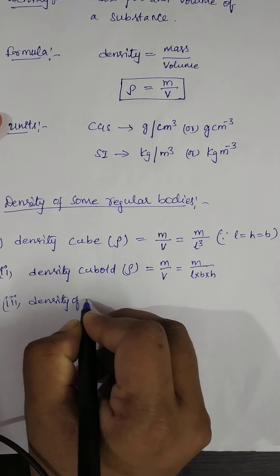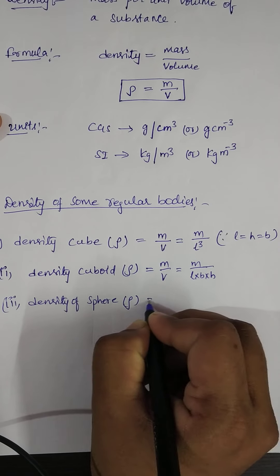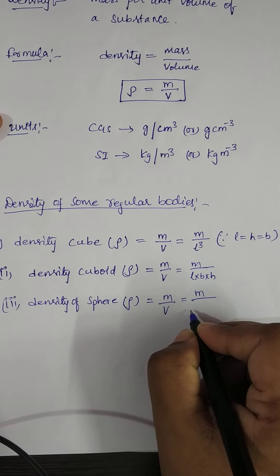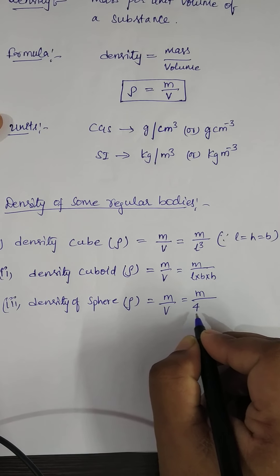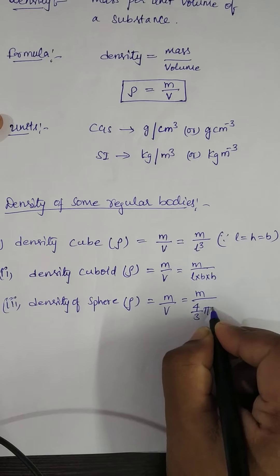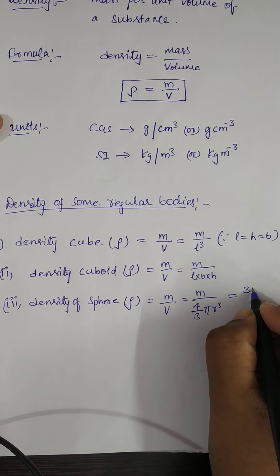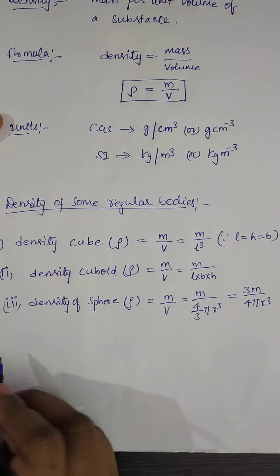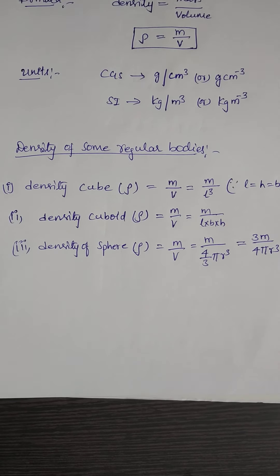The third example is the density of a sphere, which is equal to mass per unit volume. Mass can be found using the physical balance, and volume is given by the formula four-thirds pi r cubed. So density of a sphere equals 3m divided by 4πr³. Now, how to find the density of irregular bodies.